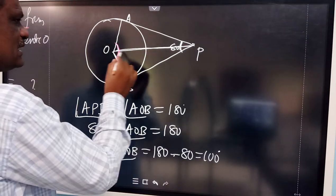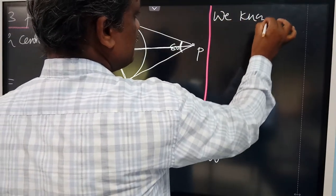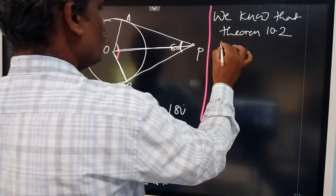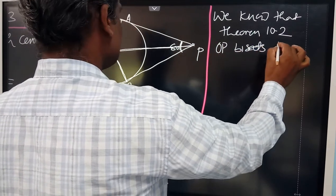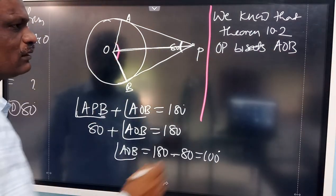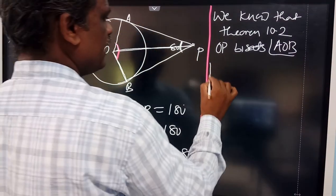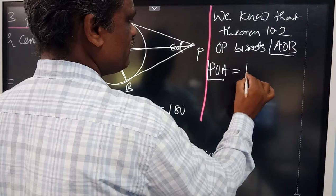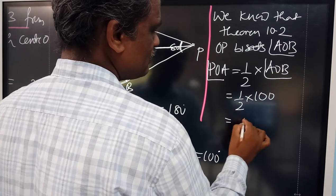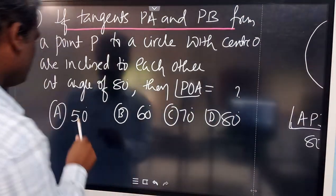By Theorem 10.2, the two triangles formed are congruent, so OP bisects angle AOB. Therefore angle POA = half of angle AOB = half of 100° = 50 degrees. So angle POA is 50 degrees, which is option A.